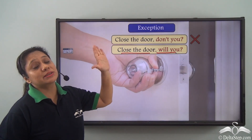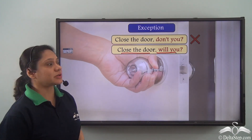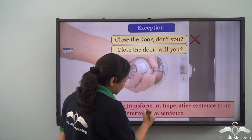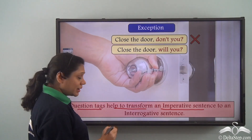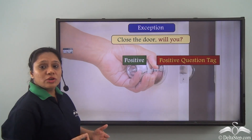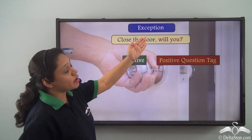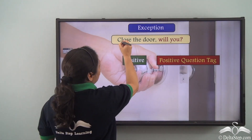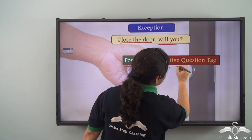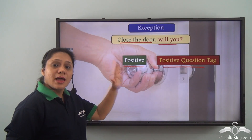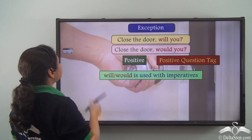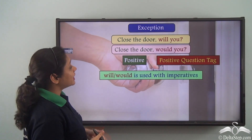We will say 'Close the door, will you?' This is an exceptional use of the question tag which does not follow the normal rules of formation. Question tags help to transform an imperative sentence into an interrogative sentence. In 'Close the door, will you?' — 'Close the door' is the positive imperative and 'will you' is the positive question tag, so in this case the imperative and the question tag are not inversely related.